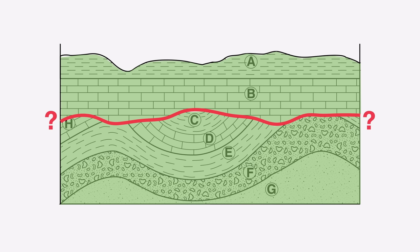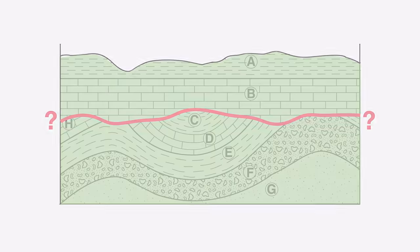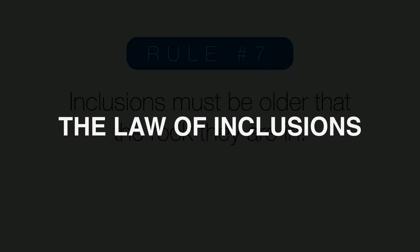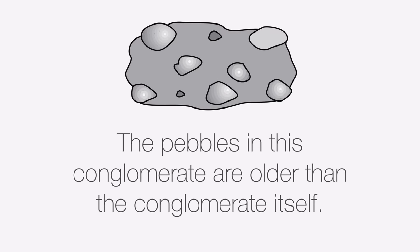This is one of the biggest mysteries in geologic history. The last rule is the law of inclusions, which states that any inclusions — little chunks of another rock layer included in a rock — must have been around first; inclusions must be older than the layer they're in. The best way to think about this is the sedimentary rock conglomerate, which is made of pebbles, cobbles, and boulders. The pebbles that make up the conglomerate must have been around before the conglomerate itself. Think about it like baking a cake — you had to have the eggs and flour before you had the cake.